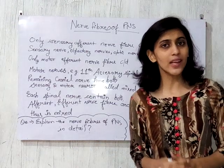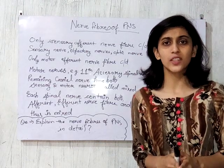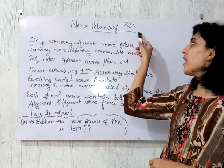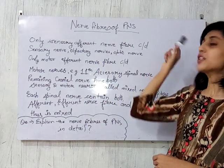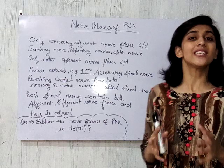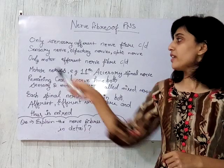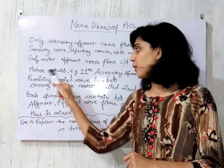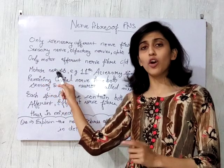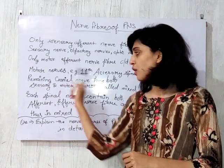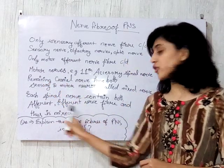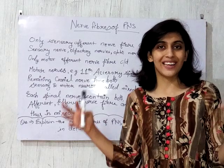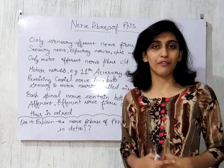P and S here is nothing except the peripheral nervous system. The nerve fibers of the peripheral nervous system are basically three. The very first is your sensory nerve fiber, the second one is your motor nerve fiber, and the third one is your mixed nerve fiber. Now, what are they? Let's go into the details.